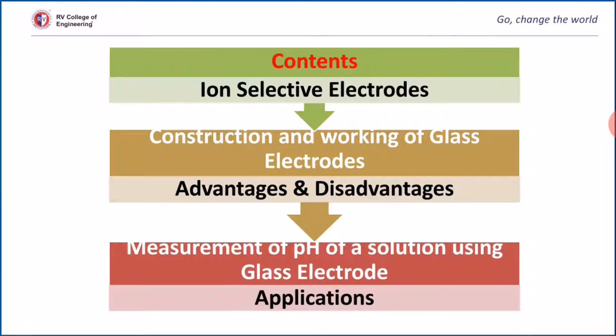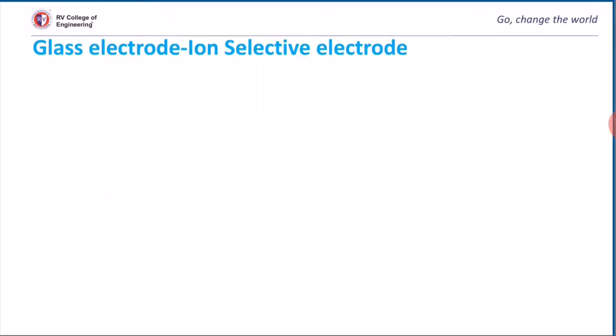In today's class we will discuss what are ion selective electrodes, construction and working of glass electrode, its advantages and disadvantages. We will measure the pH of unknown solution using glass electrode. Finally we will discuss applications.